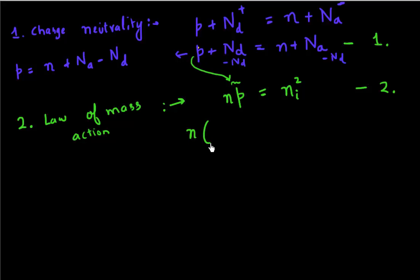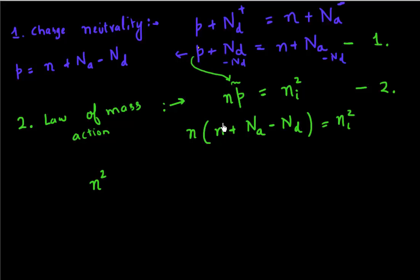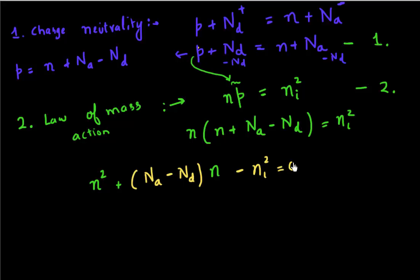Now I take this value of P and substitute it into the law of mass action equation. It becomes N times (N plus Na minus Nd) equals ni squared. This is a quadratic equation in terms of N. Collecting terms: N squared plus (Na minus Nd) times N minus ni squared equals zero.